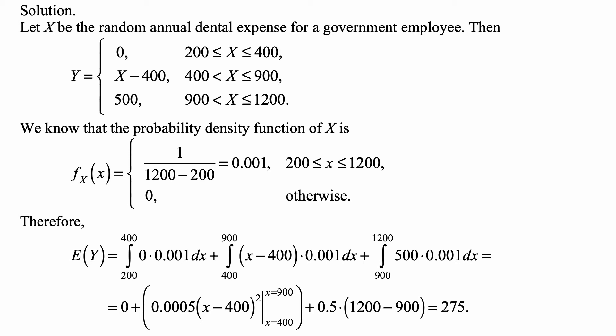Based on this, the expected value of Y equals the integral from 200 to 400 of 0 times the density 0.001 dx, plus the integral from 400 to 900 of (X minus 400) times 0.001 dx, plus the integral from 900 to 1200 of 500 times 0.001 dx. The first integral is zero because it's the integral of zero.